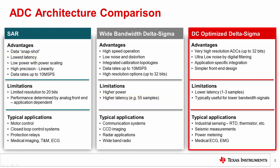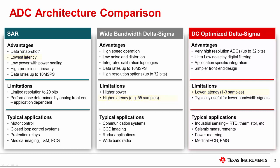Finally, the DC-optimized Delta-Sigma converters are designed to measure very low bandwidth signals. These ADCs have internal digital filters that limit the bandwidth and reduce the noise. This category of converters typically has low latency compared to the wide-bandwidth Delta-Sigma converter. This brief introduction is a preview of the content covered in the next few videos. In this video, we will cover the basic internal mechanisms used to convert voltage in a SAR and Delta-Sigma converter.